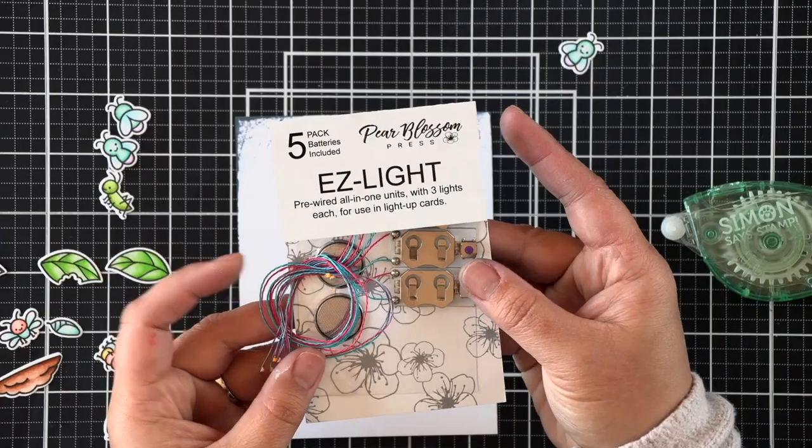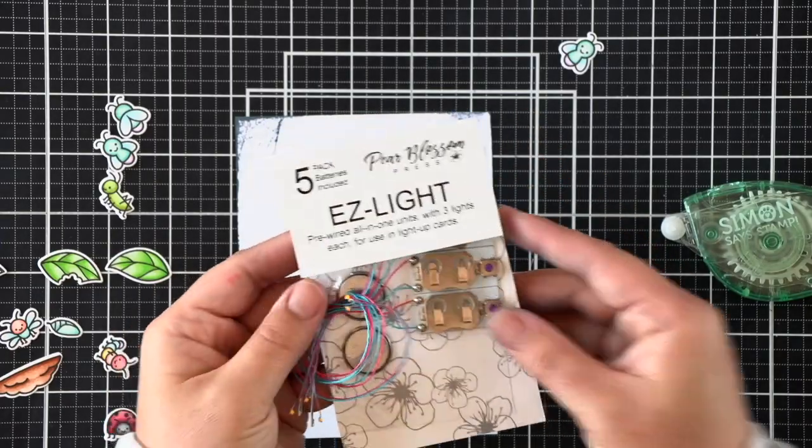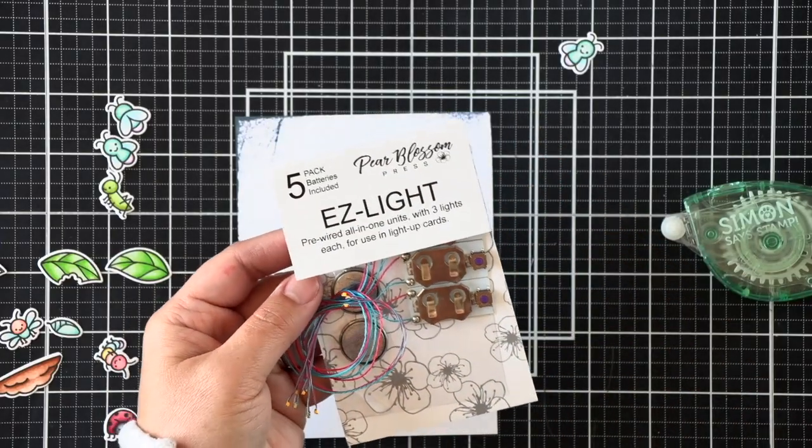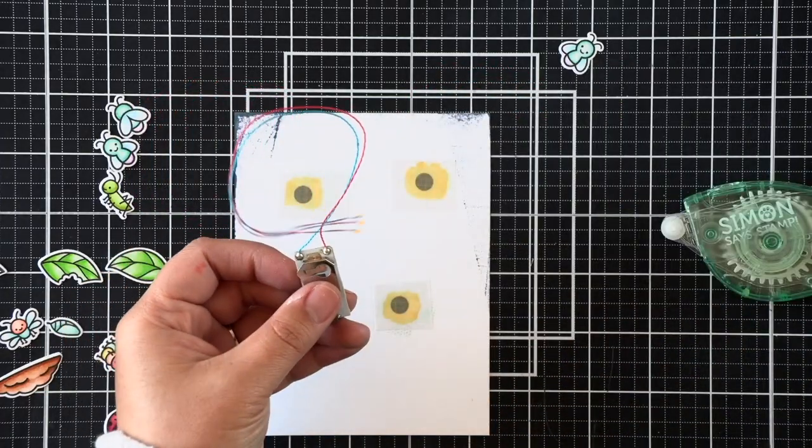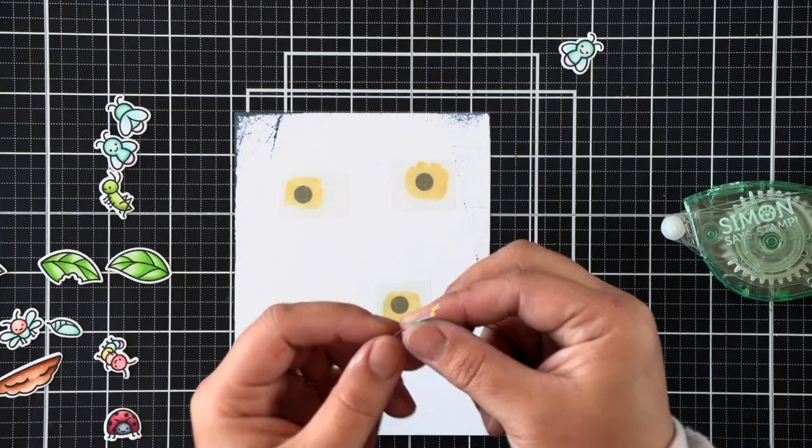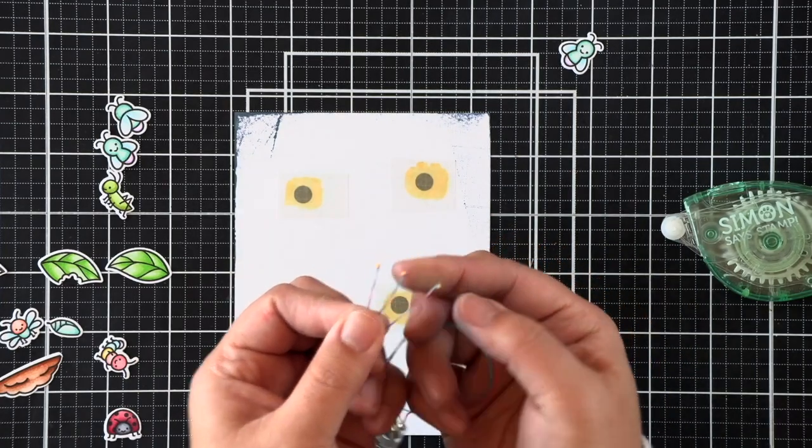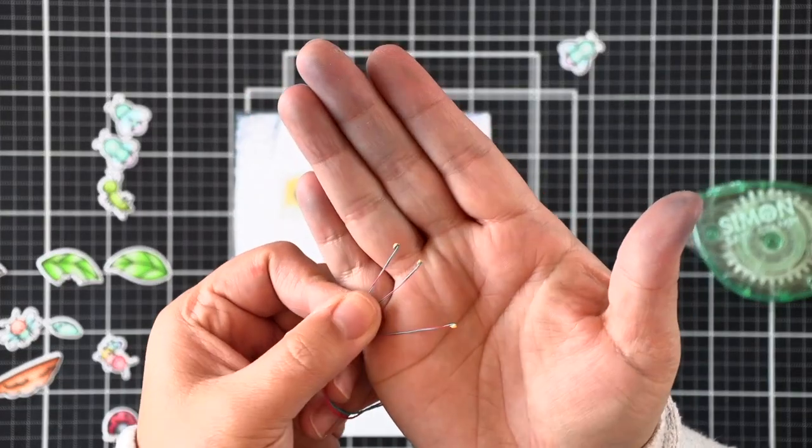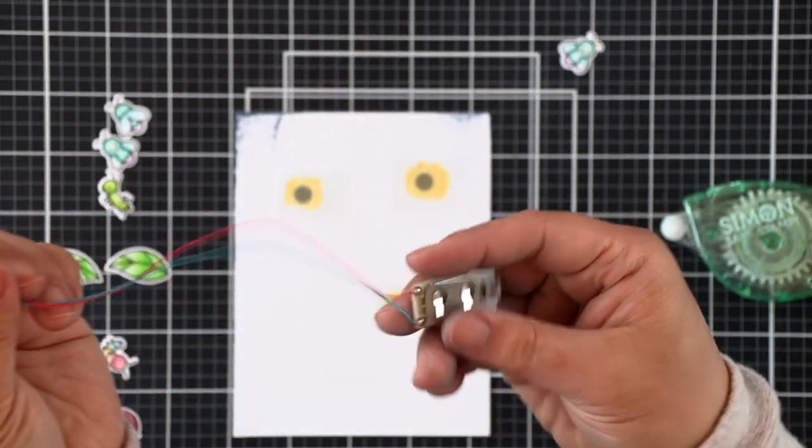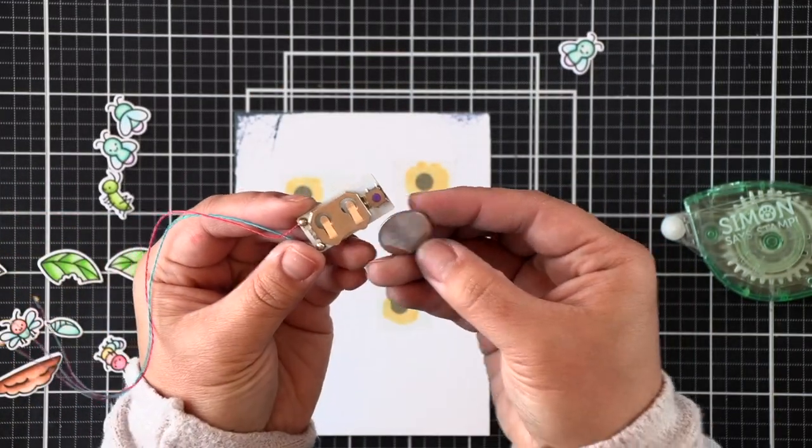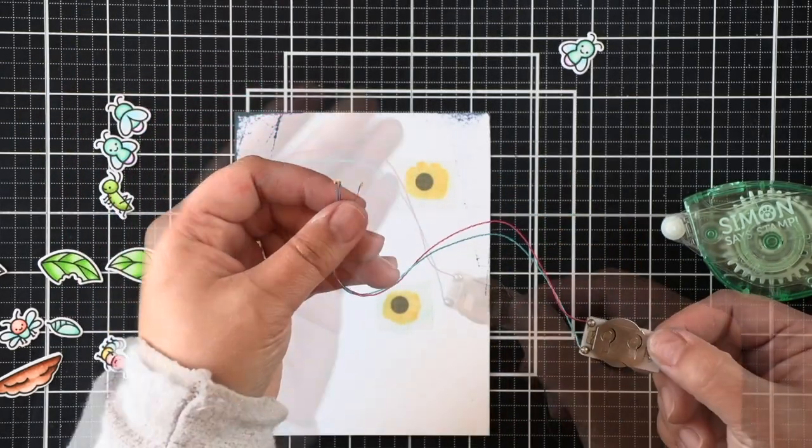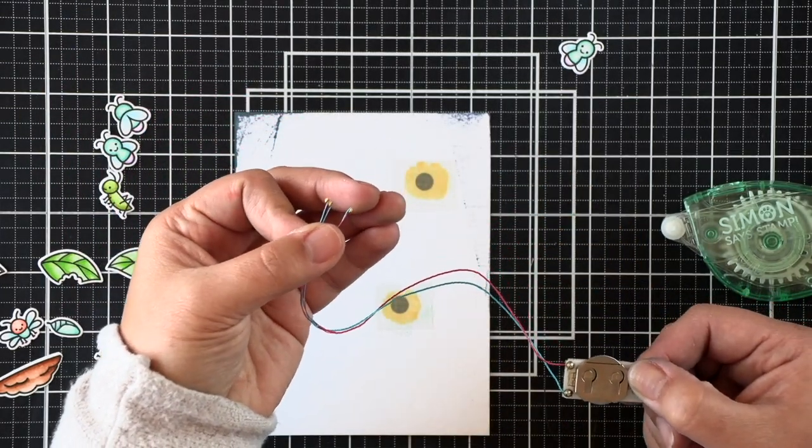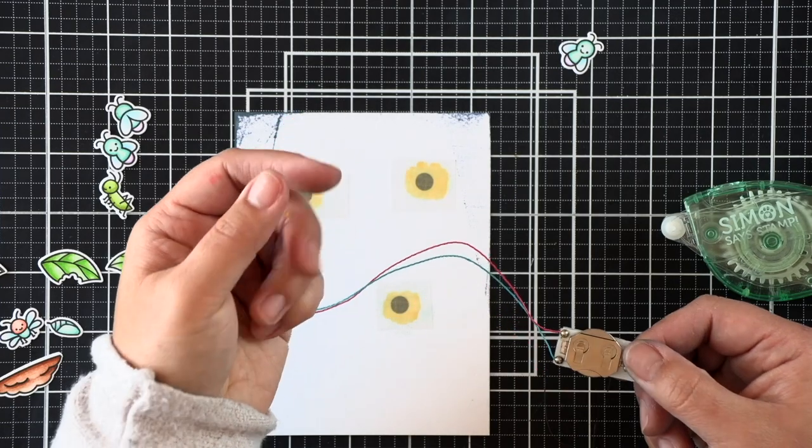And then now we can use these easy lights. These are from Pear Blossom Press and they are so easy to use because they're pre-wired. You don't have to worry about any circuits or messing up your circuits when you're using other types of light up products. There are three lights to each unit. And as you can see, there's a battery pack there. There's a positive indicator and a battery that comes with. And then there's a little button that you can press to turn on your lights. It's so simple and easy to use.